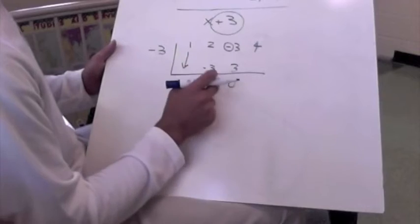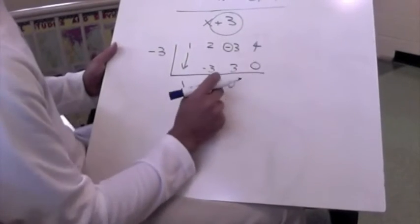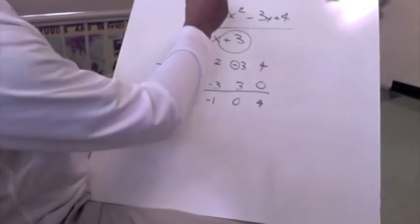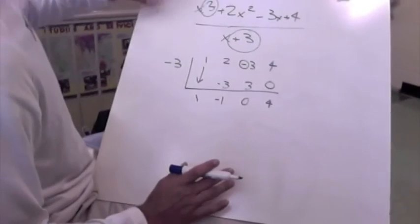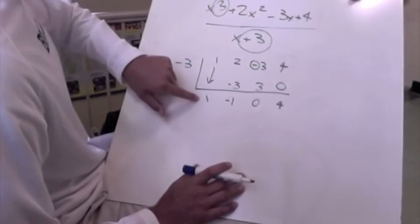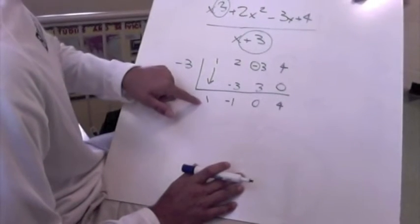And then we have a 0 here because negative 3 times 0 is 0, and then we just drop our 4. So how this is going to work is since up here in our original problem, our cubed is our highest power, we're going to start with 1 lower. So our 1 is going to be our coefficient for our x squared.